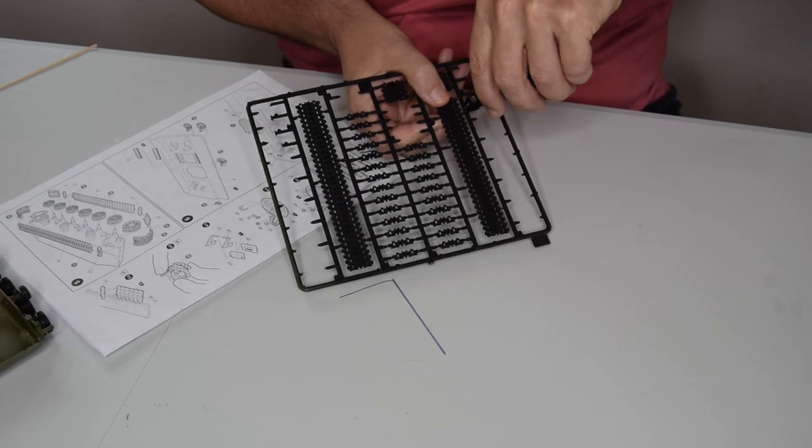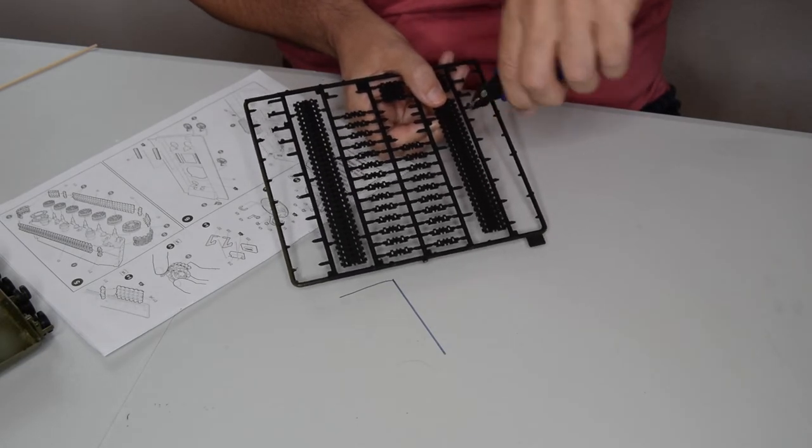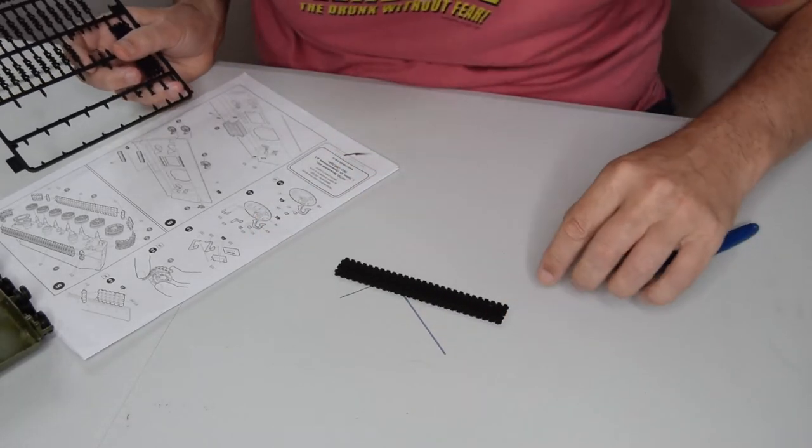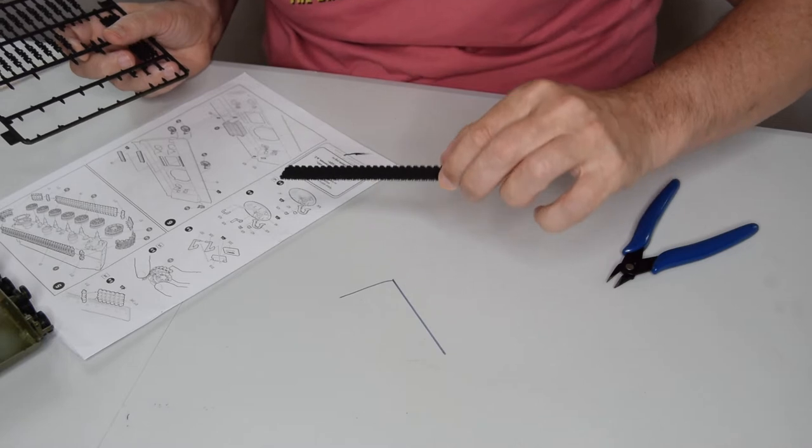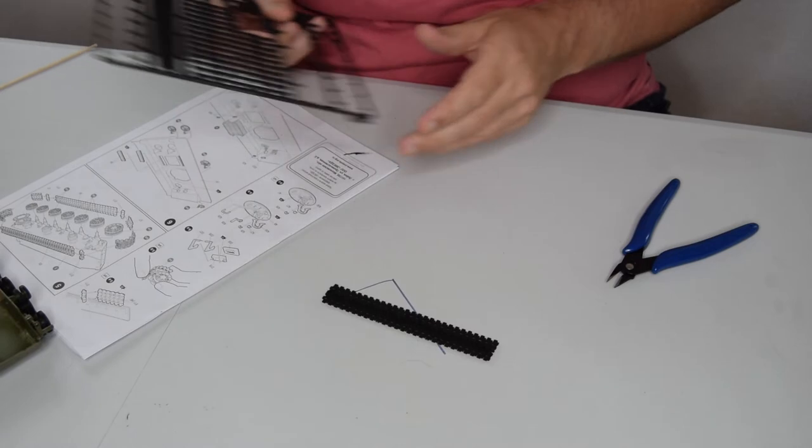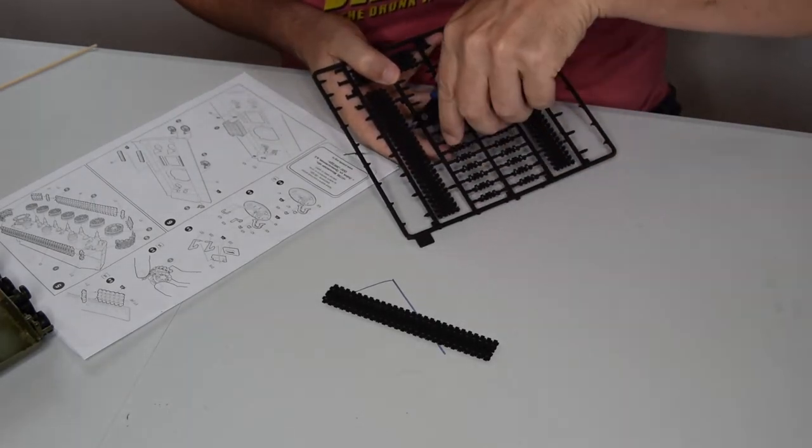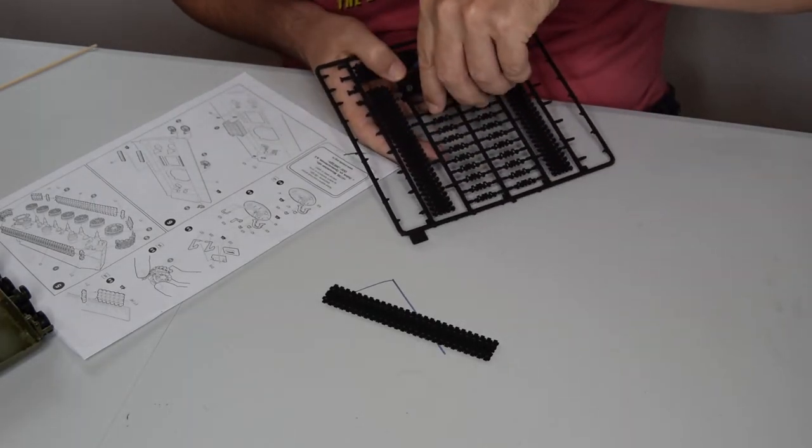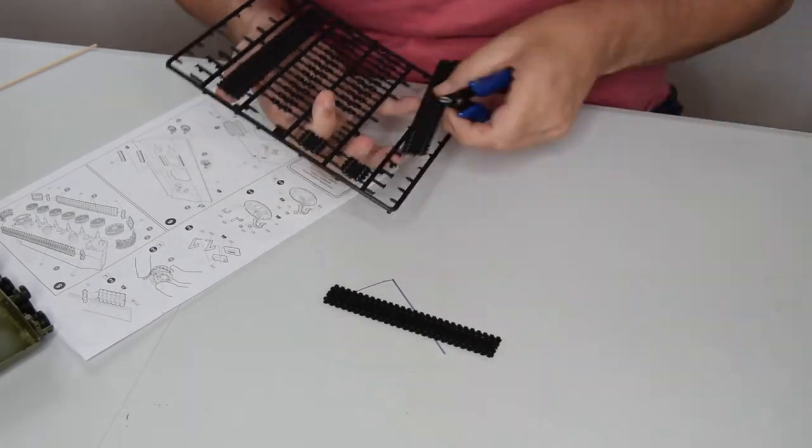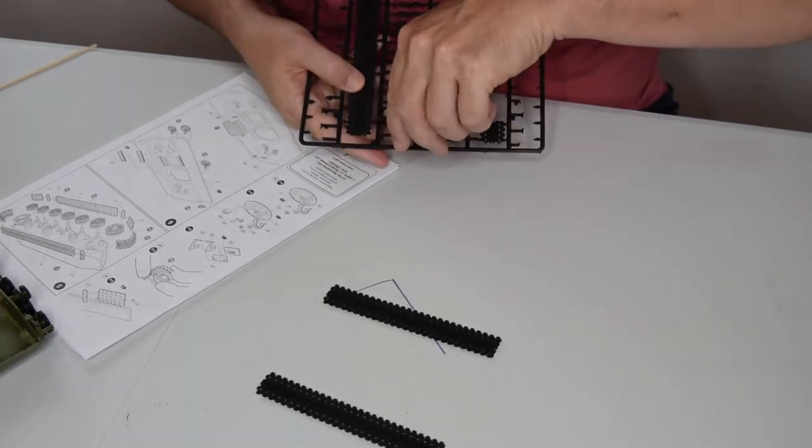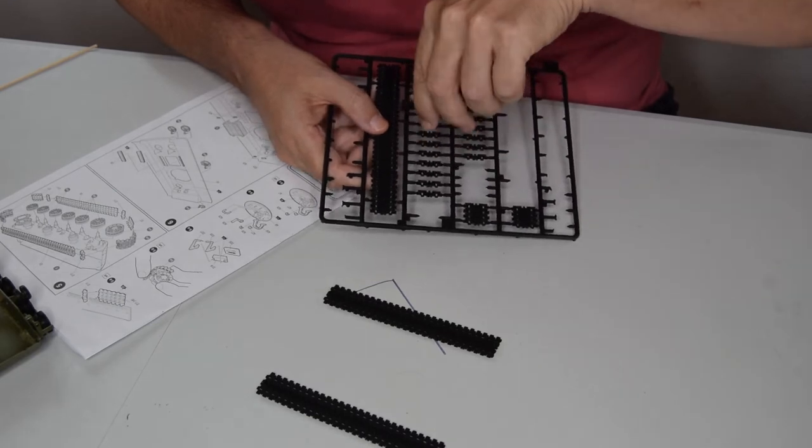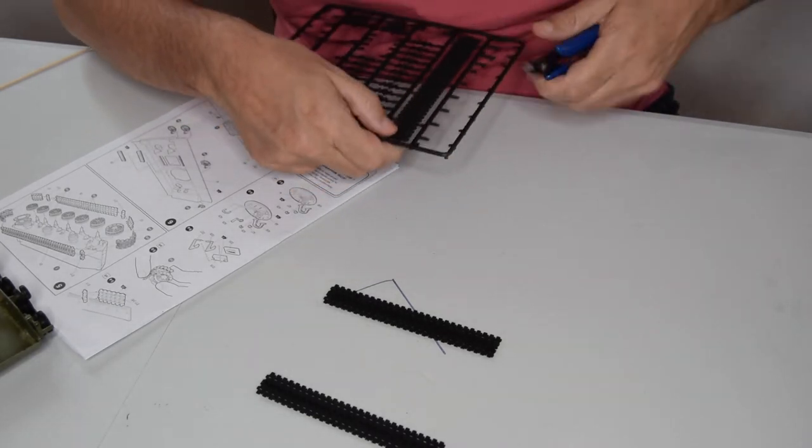Trying not to gouge into it. It looks like it goes this way with the female end going in this direction. We'll go ahead and take them all off now and place them on the table to make the rest of the process faster.